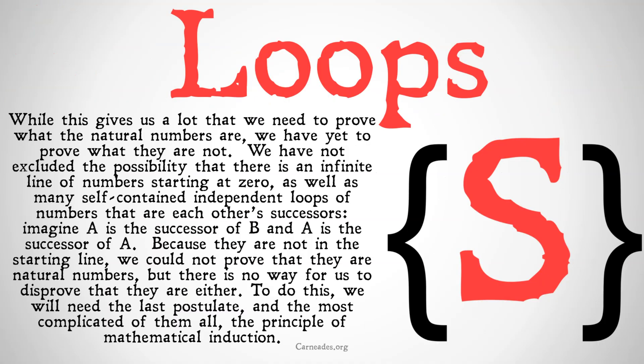While this gives us a lot of what we need to prove about the natural numbers, we have yet to prove what they are not. We have not excluded the possibility that there is an infinite line of numbers starting at zero, as well as many self-connected independent loops — for example, a small loop where A is the successor of B and B is the successor of A. This meets all of our postulates so far, but it's not what we mean by the natural numbers. We can't prove those loops are natural numbers, but we can't disprove it either. To resolve this, we're going to need the last and most complicated postulate: the principle of mathematical induction.